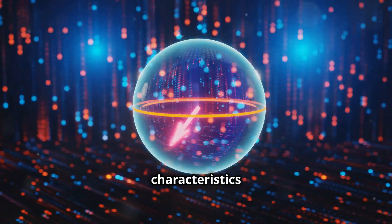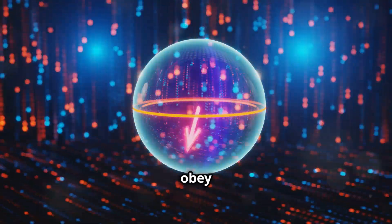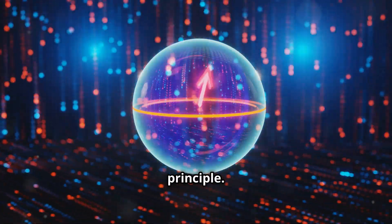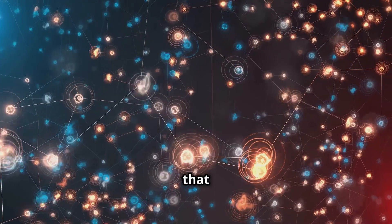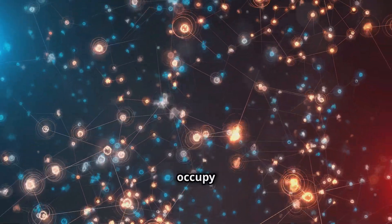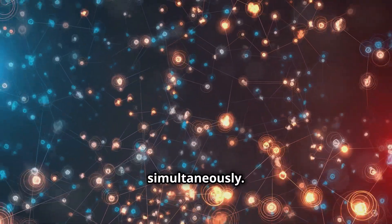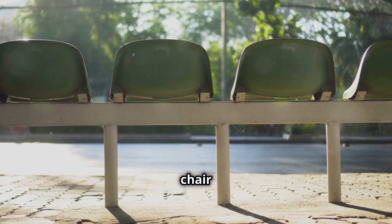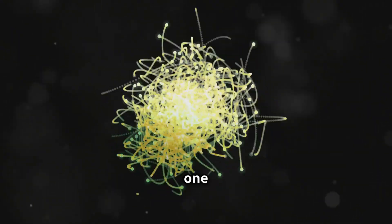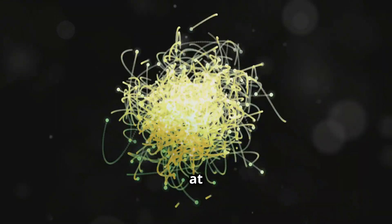One of the defining characteristics of fermions is that they obey the Pauli exclusion principle. This principle states that no two identical fermions can occupy the same quantum state simultaneously. Think of it like a game of musical chairs where each chair represents a quantum state. Only one fermion can occupy a chair at a time.